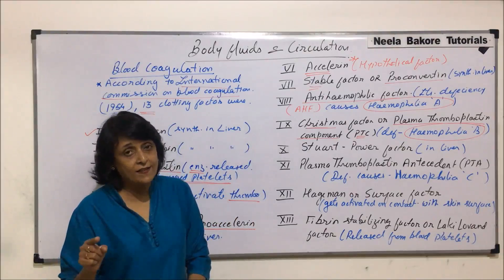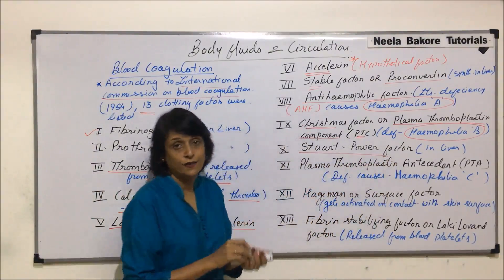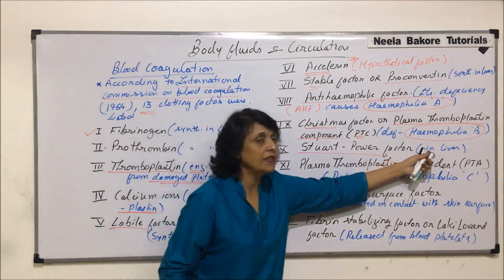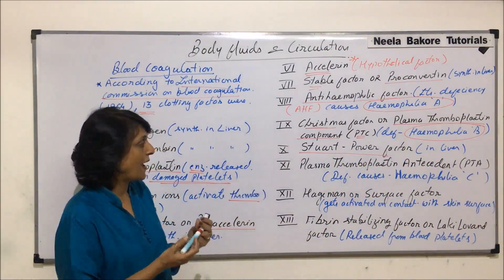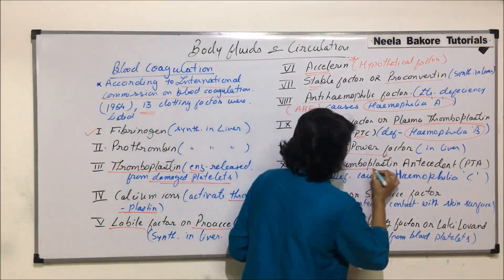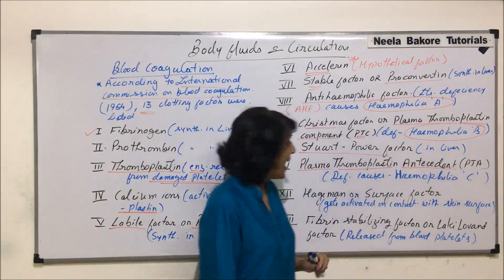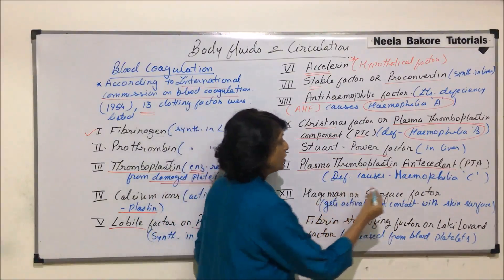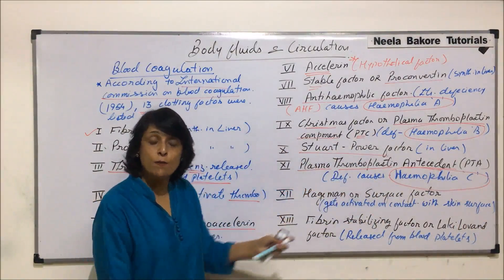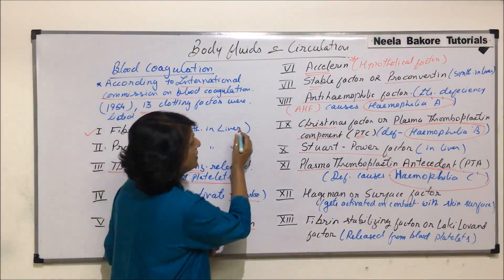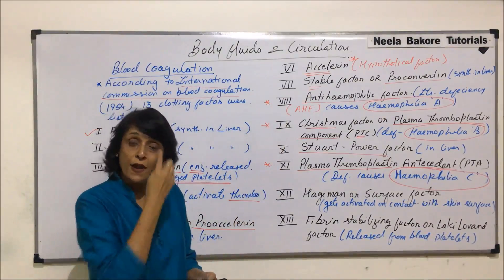The tenth factor is known as Stuart-Power factor, named after the scientists. The eleventh factor is plasma thromboplastin antecedent, abbreviated PTA. Its deficiency leads to Hemophilia C. So we now know three factors and three types of hemophilia caused by their deficiency.